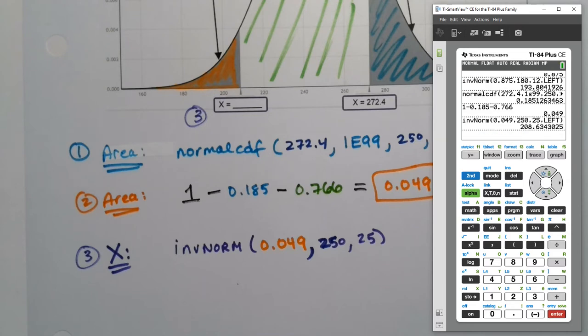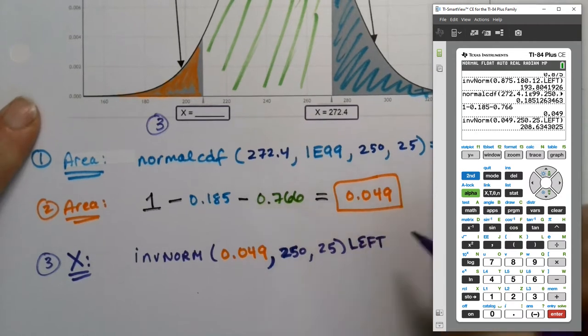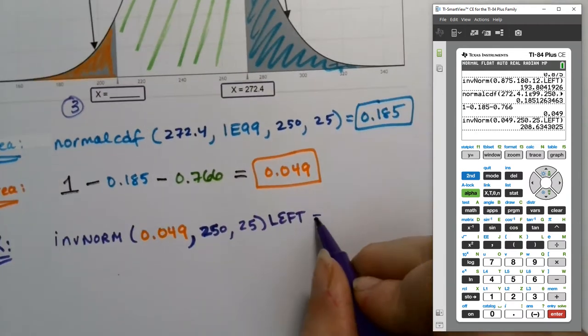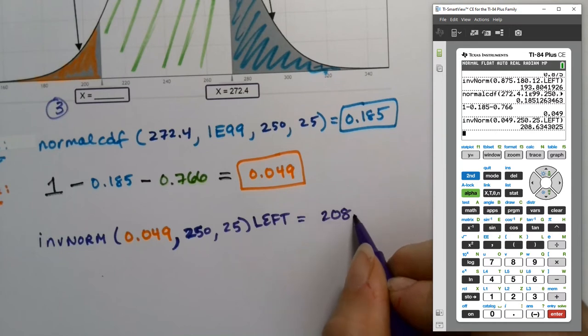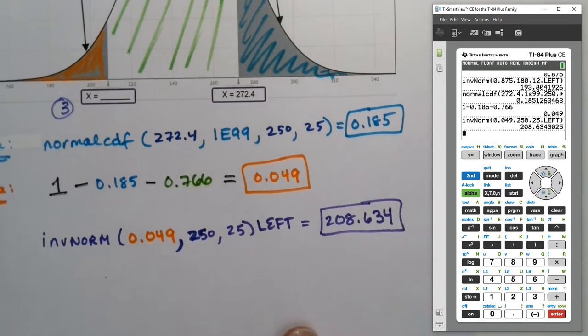There you have it, right? So in case you have a newer calculator, you can write a little note to yourself. You're doing a left, and it tells us that it's 208.634 if they want three decimal places. And there you have it.